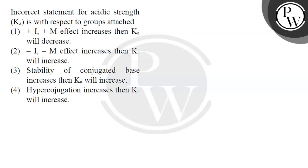Hello kids, let's see this question. The question asks for the incorrect statement for acidic strength, i.e., Ka, with respect to the groups attached. We have four different statements to analyze on this basis.